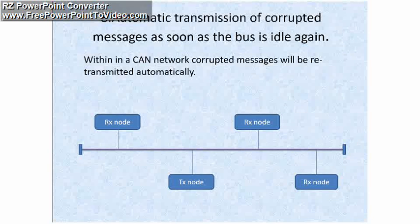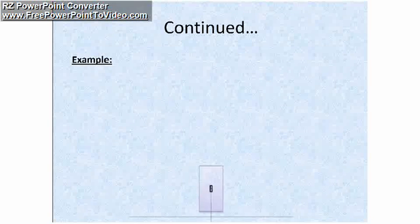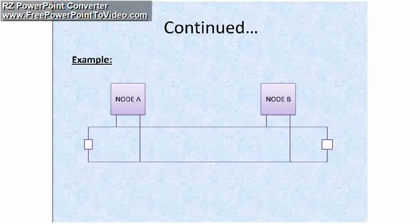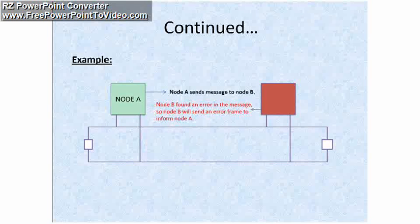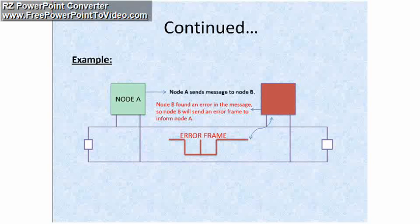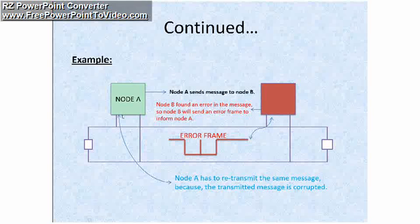Here one step ahead, you can see in the illustration: Node A broadcasts its message over the CAN bus, but Node B finds an error in the transmitted message and sends an error frame. Following the error frame, Node A has to retransmit its message. You can see Node A retransmitting its message to Node B once again.